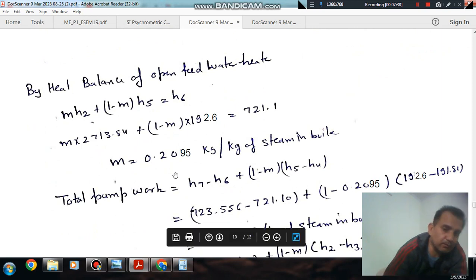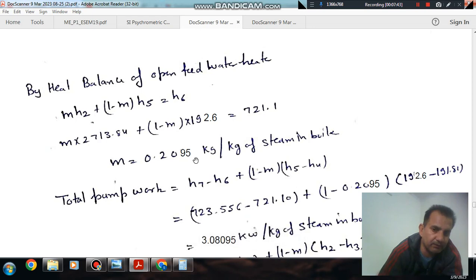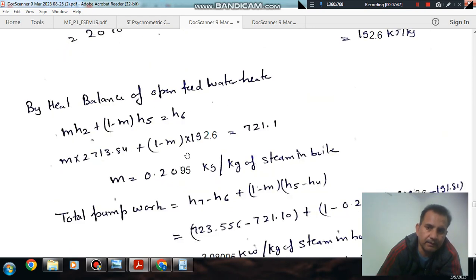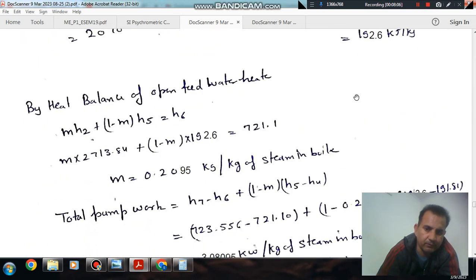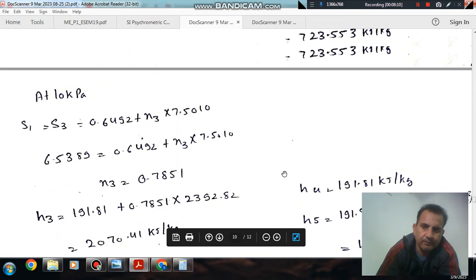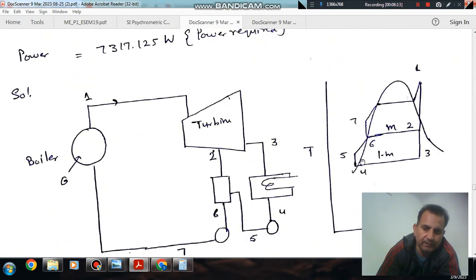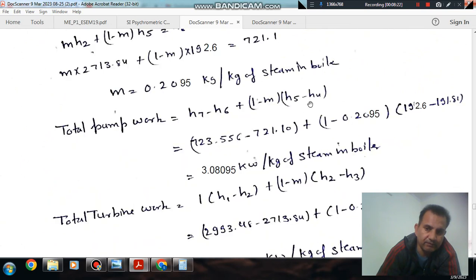If there is 1 kg of steam flowing in the boiler, then this is the mass of steam extracted. Now, total pump work is the sum of two pump works. At point 7, the total mass is 1 kg, because both the M mass and (1 - M) mass have been mixed. So pump work for the first pump is H7 minus H6, and for the second pump is (1 - M)·(H5 - H4). So total pump work, putting in the values we have already calculated, is 3.0805 kW per kilogram of steam.